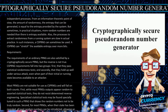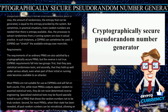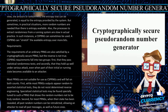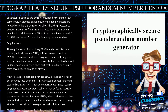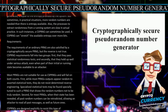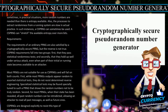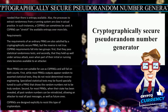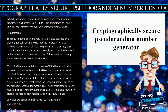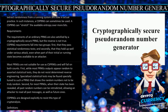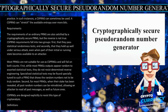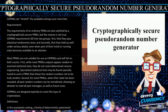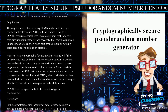First, while most PRNGs outputs appear random to assorted statistical tests, they do not resist determined reverse engineering. Specialized statistical tests may be found, specially tuned to such a PRNG, that show the random numbers not to be truly random. Second, for most PRNGs, when their state has been revealed, all past random numbers can be retrodicted, allowing an attacker to read all past messages as well as future ones. CSPRNGs are designed explicitly to resist this type of cryptanalysis.